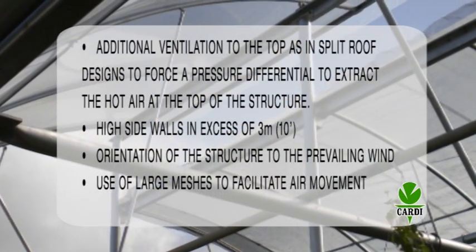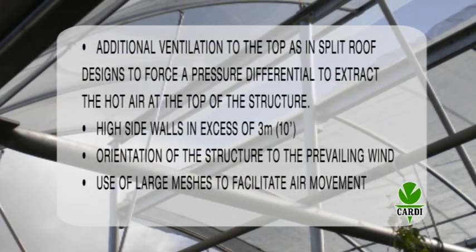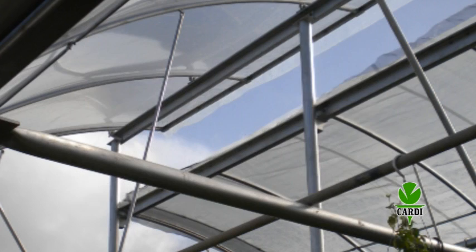These include additional ventilation to the top, as in split roof designs, to force a pressure differential to extract the hot air at the top of the structure, high side walls in excess of three meters or ten feet, orientation of the structure to the prevailing wind, and the use of large meshes to facilitate air movement.